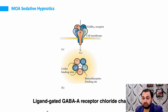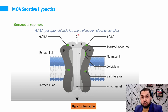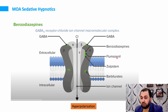The GABA receptor is a ligand-gated receptor with alpha, beta, and gamma subunits. GABA binds with the alpha and beta subunits of the receptor, stimulating chloride ion flow from extracellular to intracellular, causing membrane hyperpolarization, which suppresses neuronal activity. Benzodiazepines bind with the same alpha subunits. Barbiturates bind with both alpha and beta subunits. Flumazenil, used as the antidote for benzodiazepines, also binds to these same subunits.